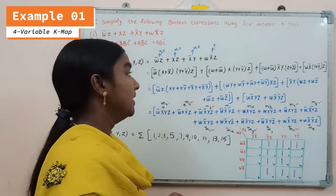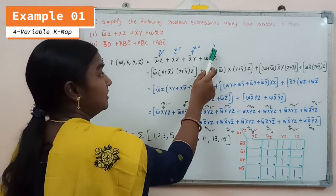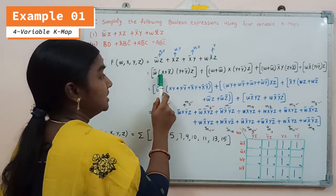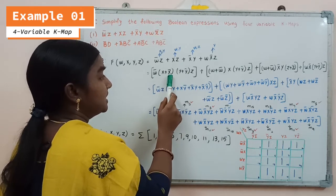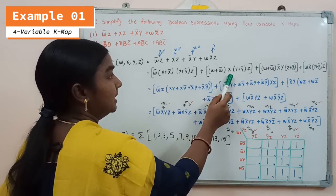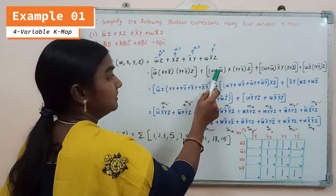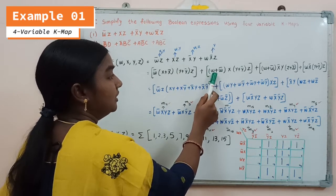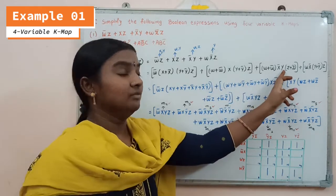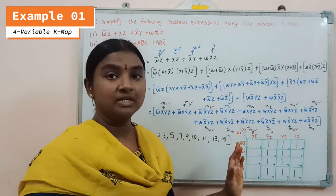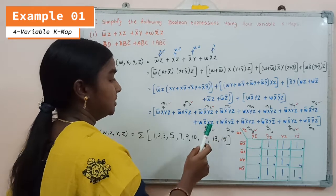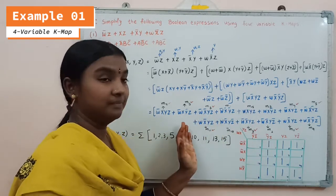For the first product term, we multiply by (x + x̄)(y + ȳ). For the second product term, variables w and y are missing, so we multiply by (w + w̄)(y + ȳ). Similarly, we follow the same procedure for the remaining terms, and after multiplying and simplifying all these terms, we are left with all the resulting product terms.